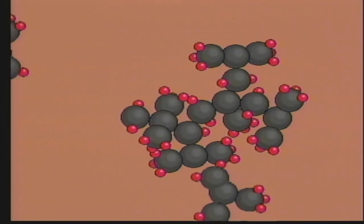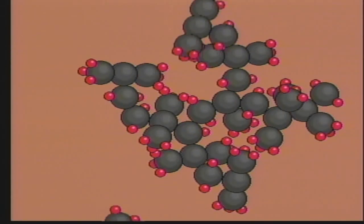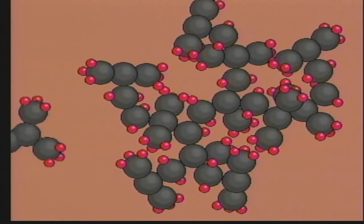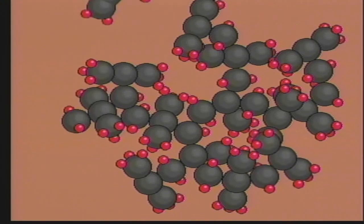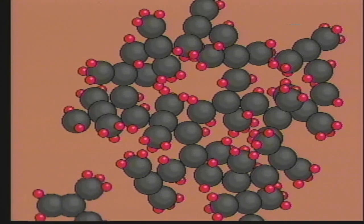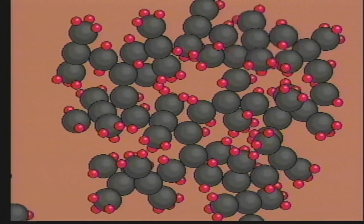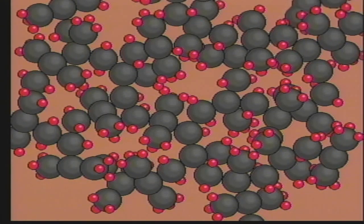Isobutylene monomers linked together in sheets create the polymer polyisobutylene. This polymer is used for making inner tubes.